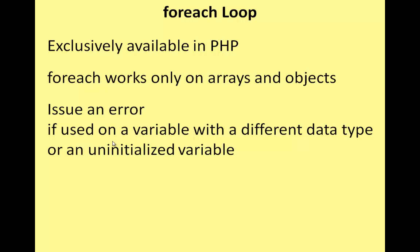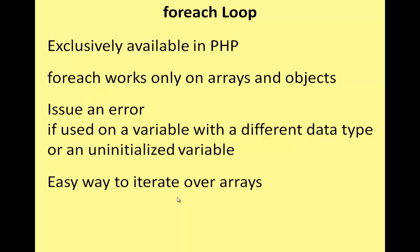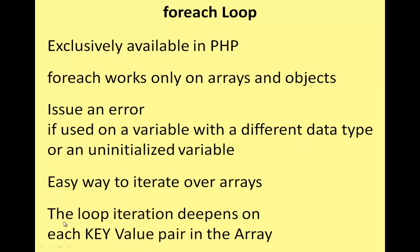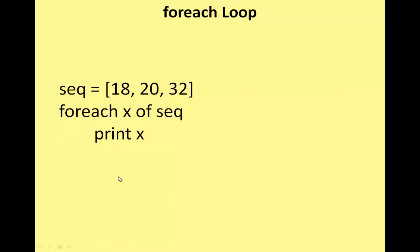Since the array is easy to use, here is a foreach loop example. Arrays are easy to iterate. The array is a key-value pair. For example, a sequence: 18, 20, 32. For each x of sequence, print x — it will write 18, 20, 32.